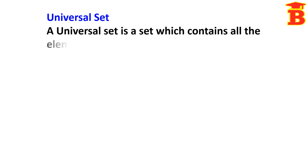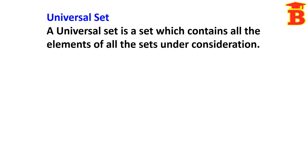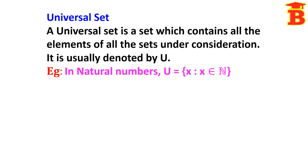Next, universal set. A universal set is a set which contains all the elements of all the sets under consideration. It is usually denoted by the capital letter U. For example, if we consider natural numbers, then U = {X | X ∈ N}, that is {1, 2, 3, 4, ...}.